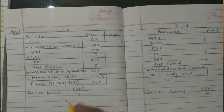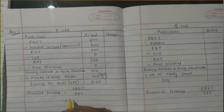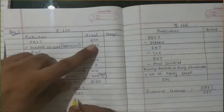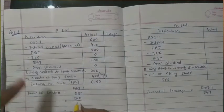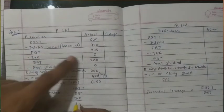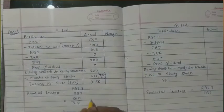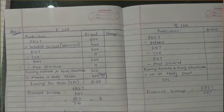On the basis of this, we calculate financial leverage = EBIT upon EBT = 600 ÷ 200 = 3.